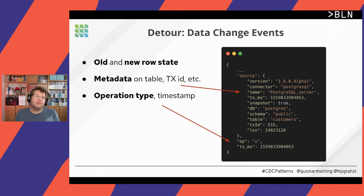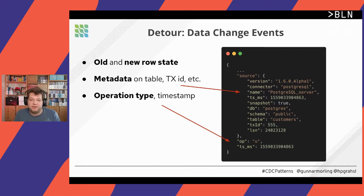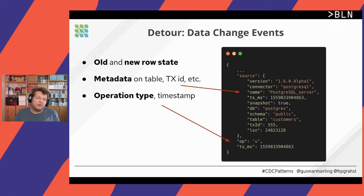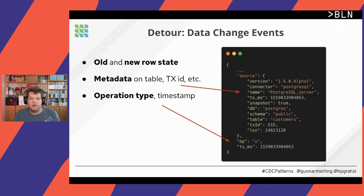There is also additional metadata like the operation type — is it an update, an insert, a create event — and the timestamp: when did this change happen? Those are the change events extracted from the database by Debezium and sent to consumers via Kafka.